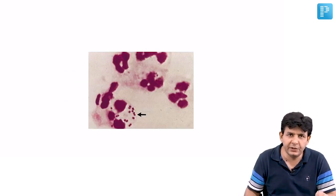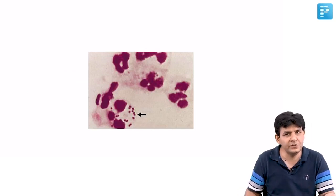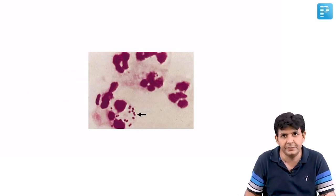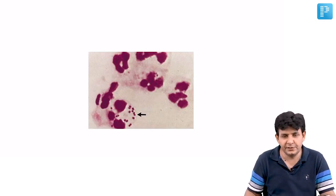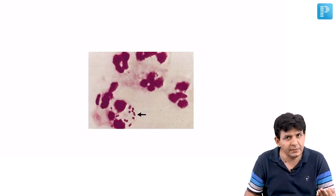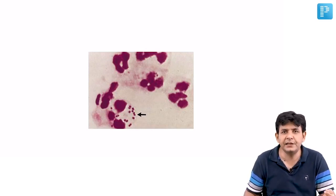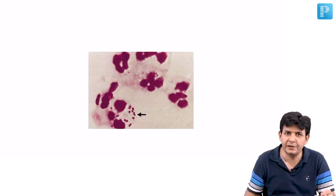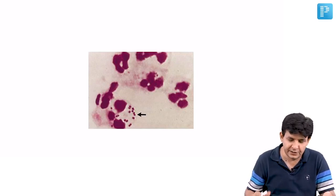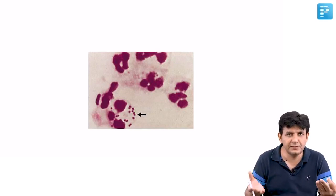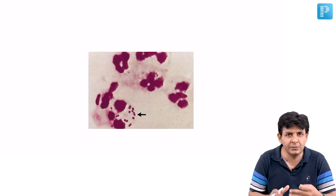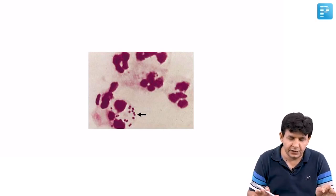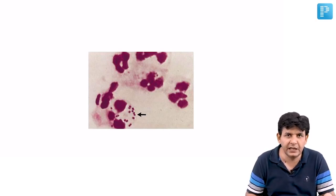Neisseria meningitidis is a lens-shaped bacterium. It is both catalase and oxidase positive. In the rapid carbohydrate utilization test, it ferments both glucose and maltose. Also focus on the fact that it appears both extra- and intracellularly — when you see this picture, you know you are dealing with Meningococcus.